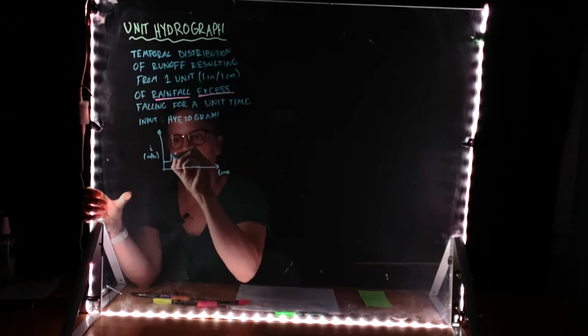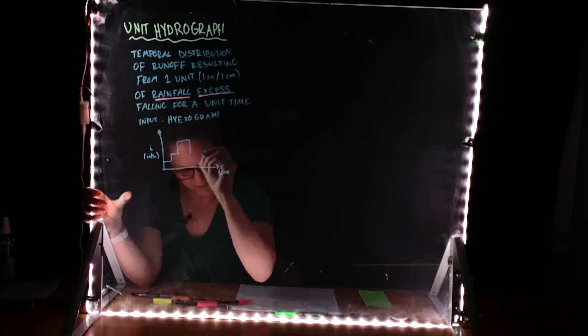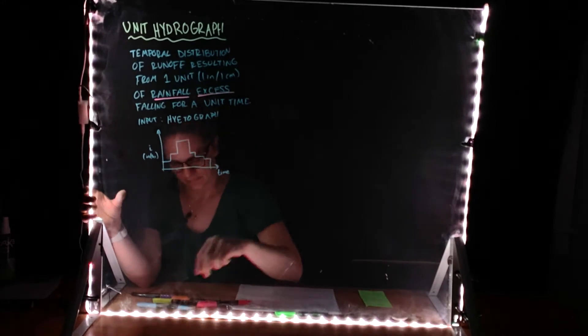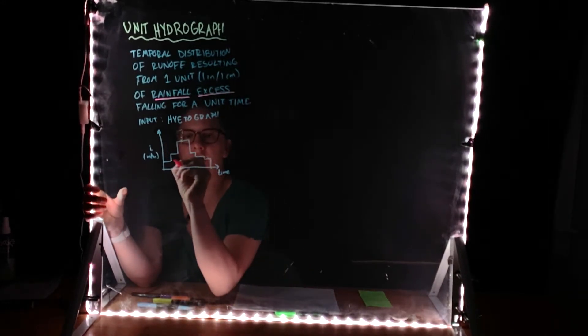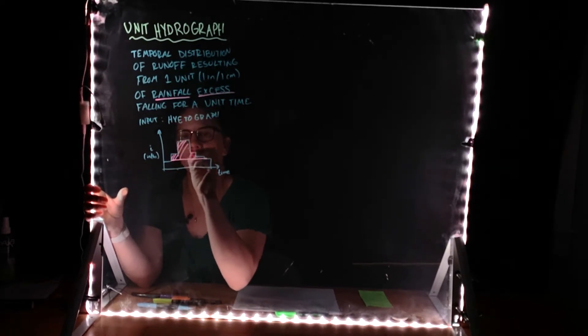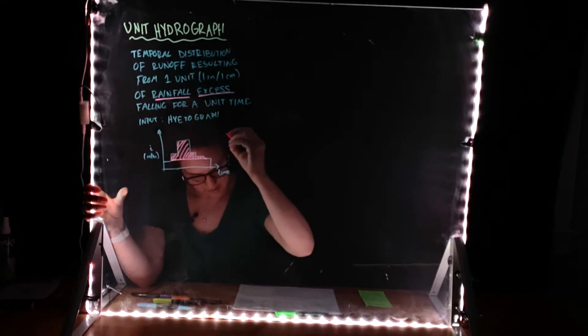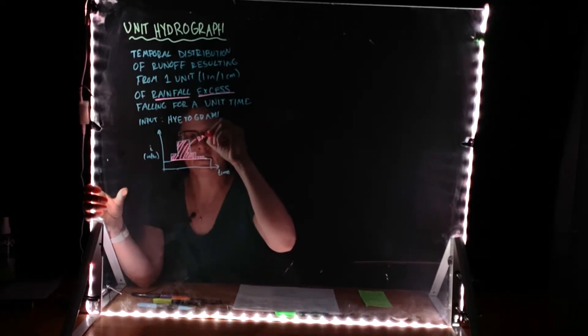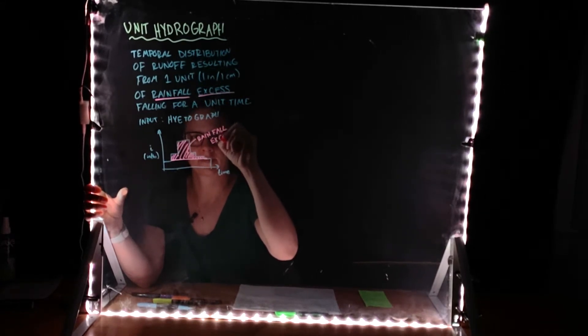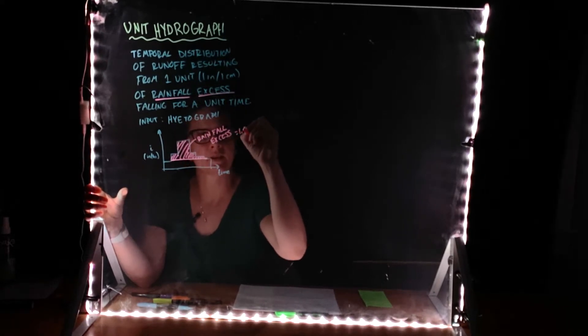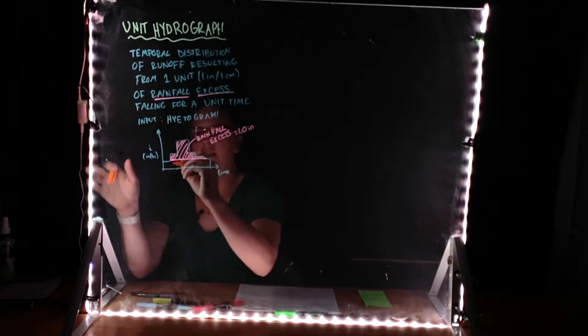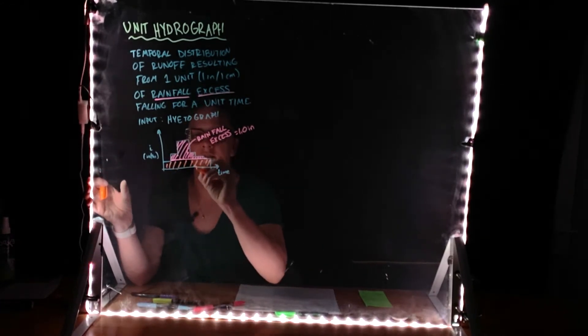And we'll have some particular storm. And we'll be able to note on this storm fall hyetograph, the excess, this is the rainfall excess, of one inch, and then everything underneath that curve is the losses.